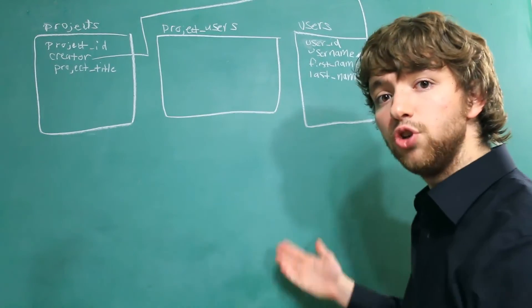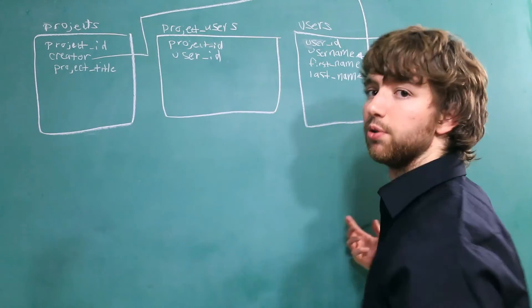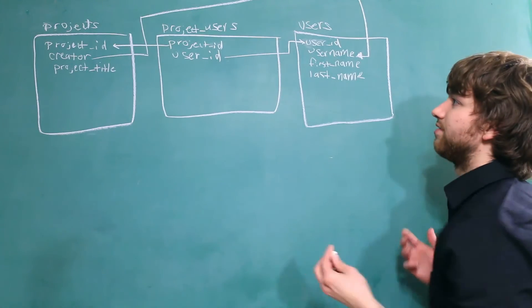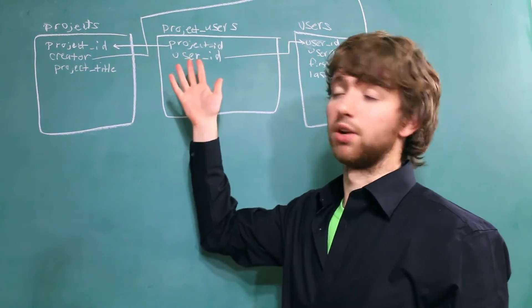And this is going to have two columns. A project ID and a user ID. And these are both going to be foreign keys. Now you see in this situation, I decided not to use the username, but I could have if I wanted to.